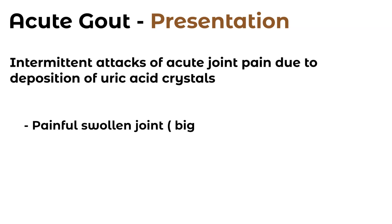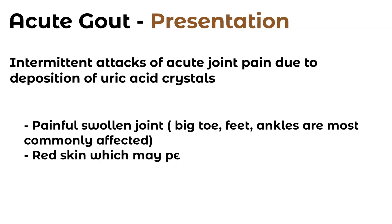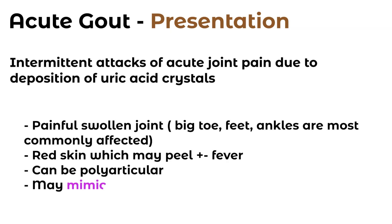Here we have our acute presentation of gout. So it's a painful, swollen joint, usually affecting the big toe. It can also affect the feet and the ankles. We have red skin, which may peel over the top of the inflamed joint, and a fever can be present. It can be polyarticular — meaning affecting multiple joints — especially in the elderly. One thing in our differential diagnosis we need to be conscious of is that it may mimic septic arthritis, which is quite the emergency.